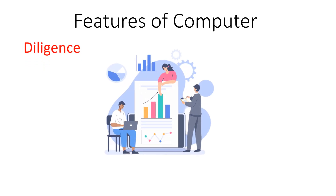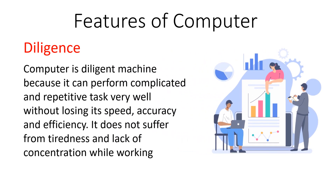The next feature is diligence. Diligence refers to the capability of a computer system to work continuously or repeatedly for a long period of time without losing speed and accuracy. Computer is called a diligent machine because it can perform complicated and repetitive tasks very well without losing speed, accuracy, or efficiency. It does not suffer from tiredness or lack of concentration, making it a very powerful and useful device.